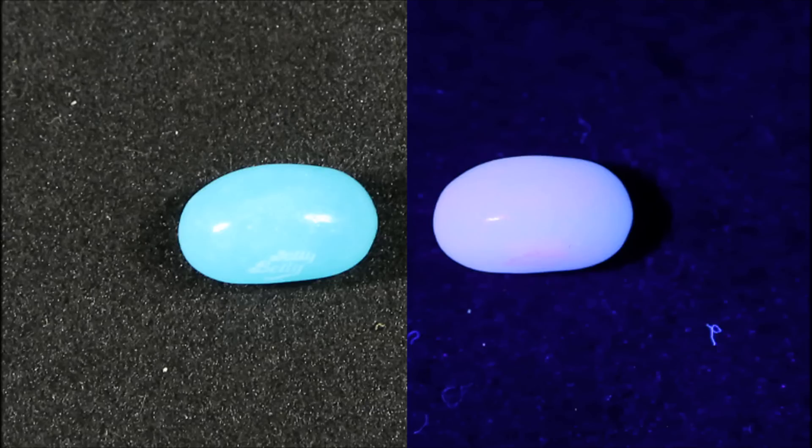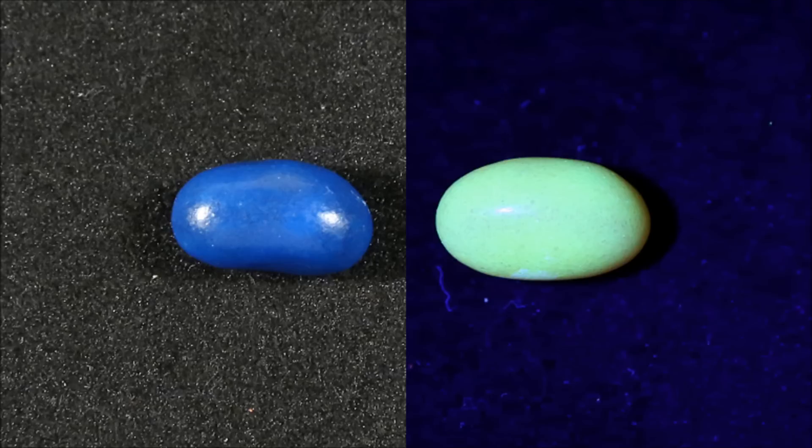It changes from a light sky blue to a glowing violet. Blueberry changes from a very pure blue to a rather sickly greenish yellow.